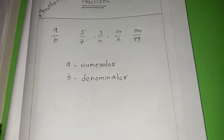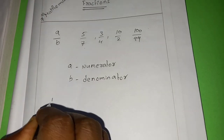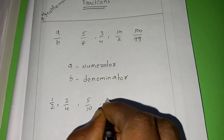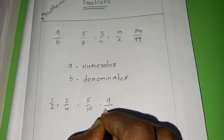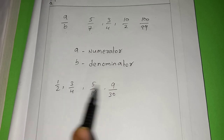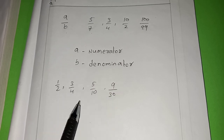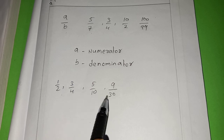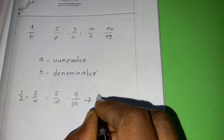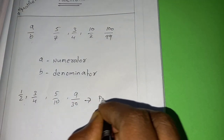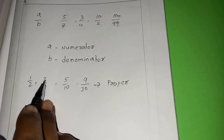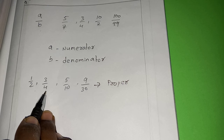Now I am going to write some fractions: 1 by 2, 3 by 4, 5 by 10, 9 by 13. If you observe all these numbers, the numerator is less than the denominator. If the numbers are like this, then we call them proper fractions. If the numerator is less than the denominator, those are called proper fractions.